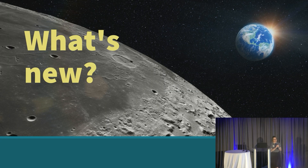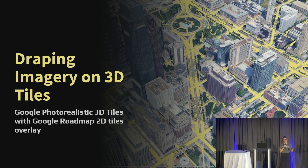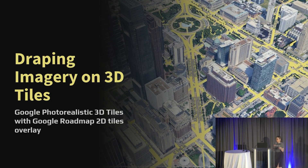Diving into what is new — if you saw the keynote this morning, some of this might be a little redundant, but we're going to talk about it in a little more detail. This was a big community request we've had for a couple years now, and finally, as of the June 1st release, we have released draping imagery on 3D tiles. This gives us the ability to take raster imagery and drape it on top of datasets like Google Photorealistic 3D tiles. In this case, this is Google's 2D map data — their roadmap data and labels draped on top of their 3D tiles.